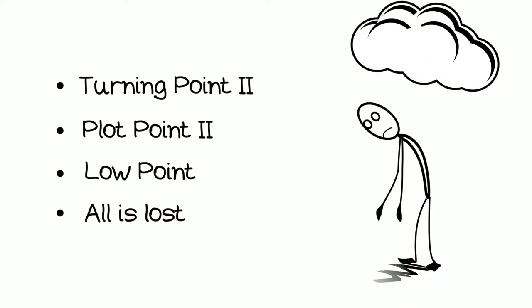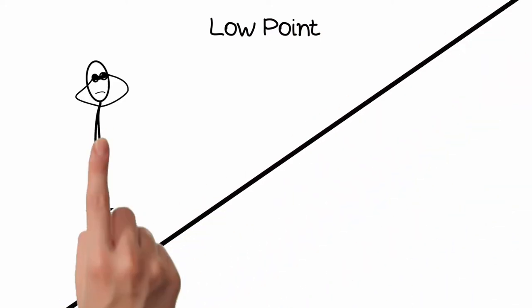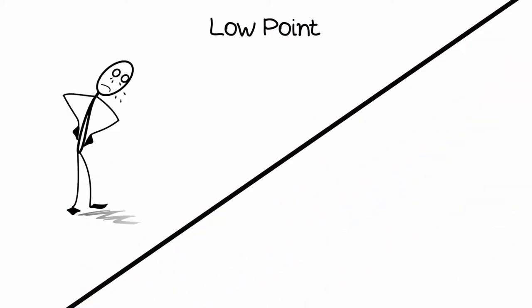The low point is a point when it seems like everything is lost for your main characters. In the second turning point, or low point, you can find two possible versions. Either everything is going wrong for the protagonist and it seems that all is lost, or the protagonist may have achieved everything they wanted, but still be frustrated because now they understand that there's something else they actually need. They have some kind of realization.